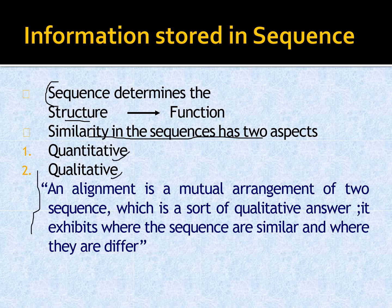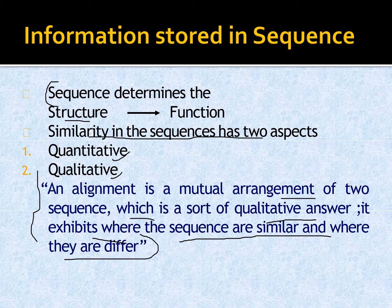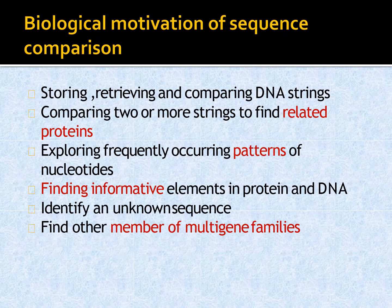An alignment is a mutual arrangement of two sequences, which is a sort of qualitative answer. It exhibits where the sequences are similar and where they differ. We'll talk about global and local alignment.